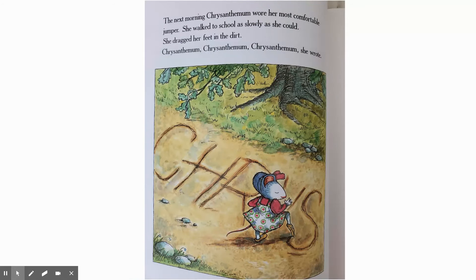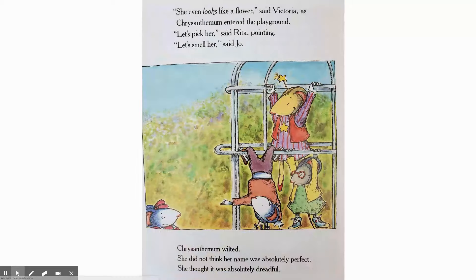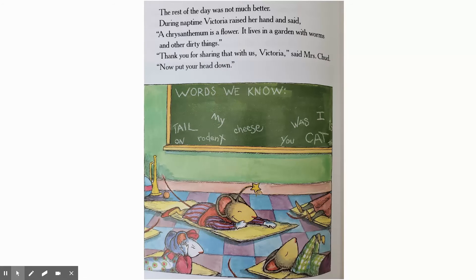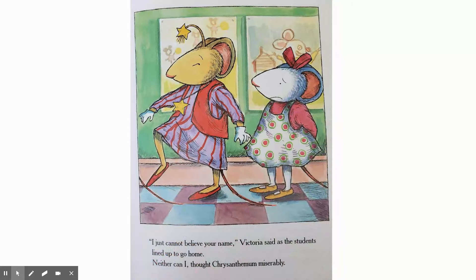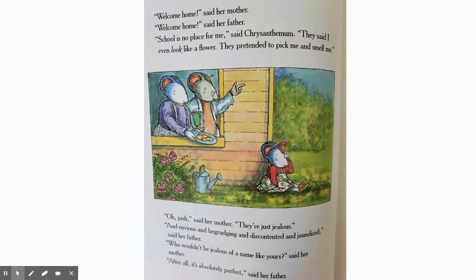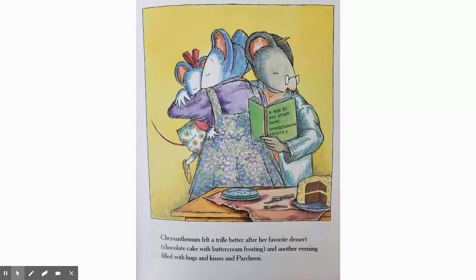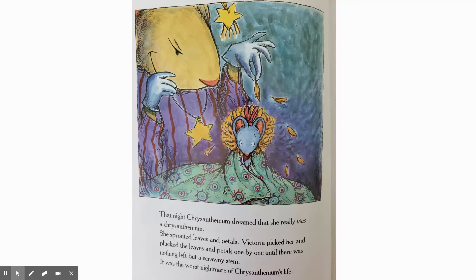She wakes up ready for school again. She's already writing her name again — she might have just forgotten completely about the other kids. But Chrysanthemum wilted again when the kids started making fun of her when she gets to school. They're laughing at her even on the mats; she's covering her ears. They keep making fun of her and she has a miserable second day of school again. What an unfortunate way to start school. Her parents made her feel a little bit better, but when she went to bed that night she had a nightmare.